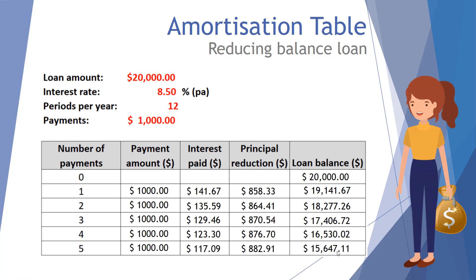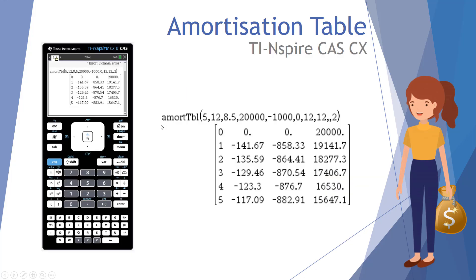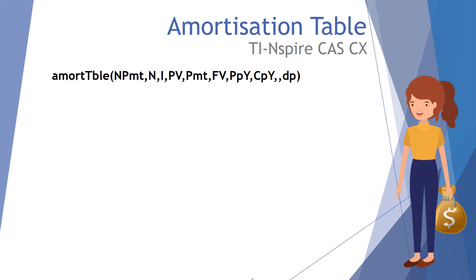That's our completed amortization table for Jenny's loan: twenty thousand dollars at eight point five percent per annum compounding monthly with payments of a thousand dollars each month. This can also be done quickly on the TI-Nspire CAS calculator using an amort table function. The amort table program has very particular syntax — values must be entered in the right order and the right format.